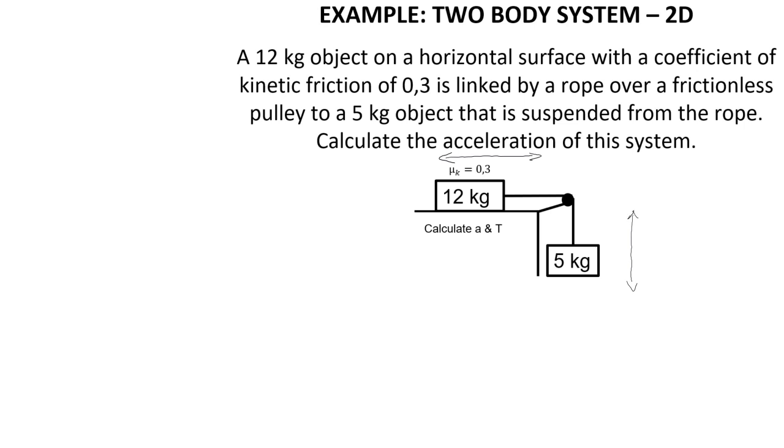Seemingly we would think that this means it is a two-dimensional system, but what we are not noticing is that this pulley here essentially converts the one dimension into the other. So what we can see is that when this 12 kilogram object moves to the right, inevitably the five kilogram object would move downward. And so we can see this as a linked motion, and therefore we say that it is actually still one-dimensional motion, and we would therefore answer this question in the same way that we answer any other two-body system, where we start by drawing a free-body diagram for each object.